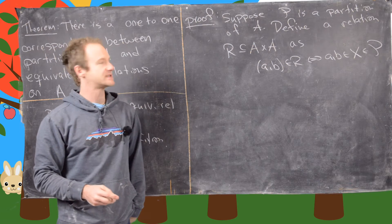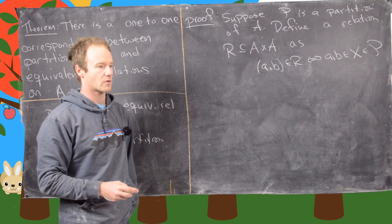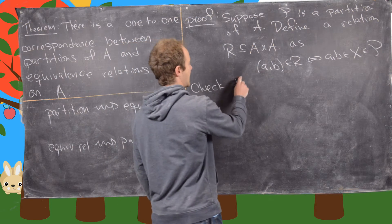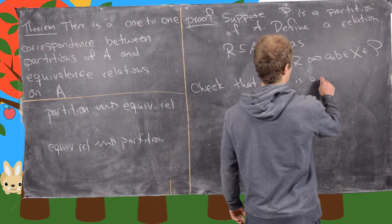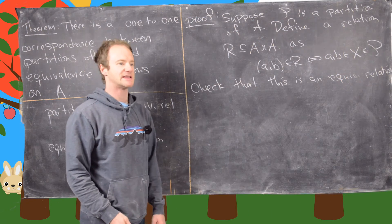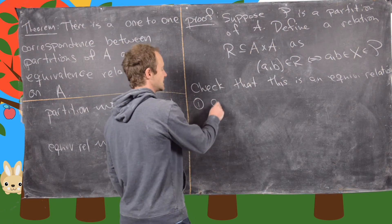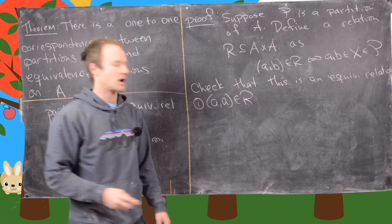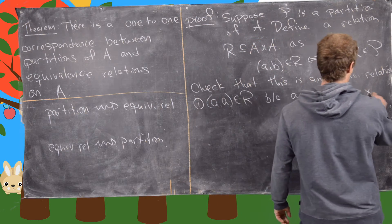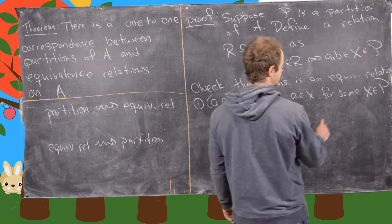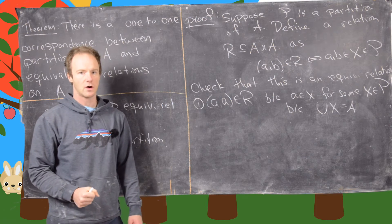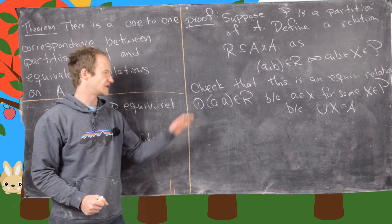We want to check that this relation satisfies reflexivity, symmetry, and transitivity. For reflexivity, we need to check that (a, a) is in R. We can say that a is in X for some X in the partition, because the union of all those X's equals A. So since that union equals the whole set, we can find one element of the partition that contains a.